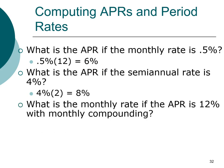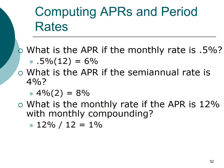Let's try it the other way. If the APR is 12% and you have a loan that requires monthly payments, what is the monthly rate? Of course, 12% divided by 12 is 1% per month. Now you have mastered the concept between annual percentage rate and period rate, and we're going to look at effective annual rate.